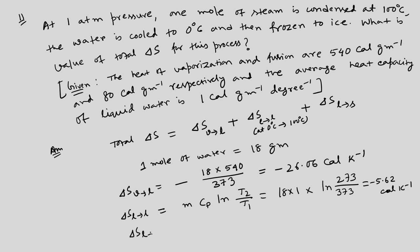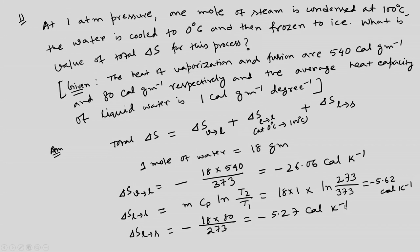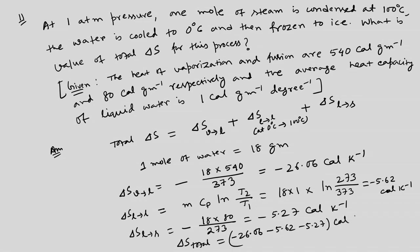For the freezing step (liquid to solid), heat is released, so we have a minus sign. Delta S_liq_to_solid equals minus 18 times 80 divided by 273, giving minus 5.27 calorie per Kelvin. Therefore, delta S_total equals minus 26.06 minus 5.62 minus 5.27 calorie per Kelvin.